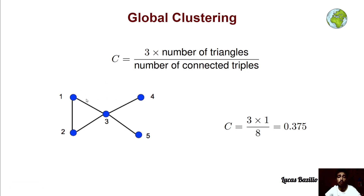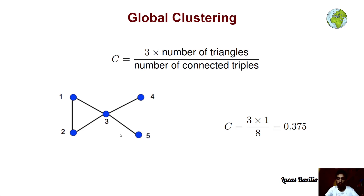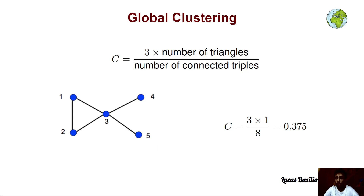For example, a possible connected triple could be 1, 3, 5. Also 1, 3, 4. Then 4, 3, 5. Also 2, 3, 4 and 2, 3, 1 and 2, 3, 5. And also 2, 1, 4 and 1, 3, 2. Note that the triple 1, 2, 3 and the triple 1, 3, 2 are different connected triples because the node in the middle is different. So in total we have 8 connected triples.